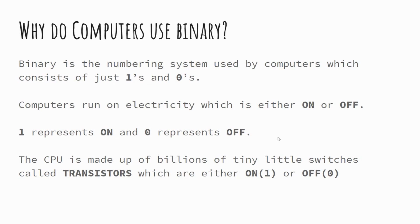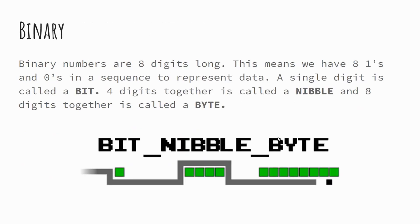Computers don't necessarily understand ones and zeros as such — the one and zero simply represent whether a switch is on or off. A single one or zero by itself is referred to as a bit, and that's the smallest amount of storage a computer can have.